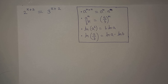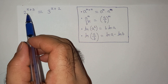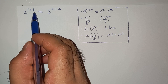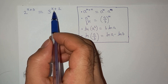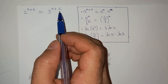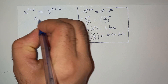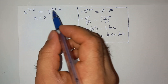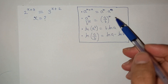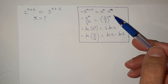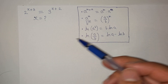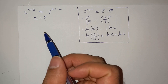Hi guys, welcome back to the channel. Today we are going to solve this question: 2 power (x+3) equals to 3 power (x+2), and we have to find the value of x. While solving this question, I am going to use exponential and logarithm rules. Now let's start solving it.